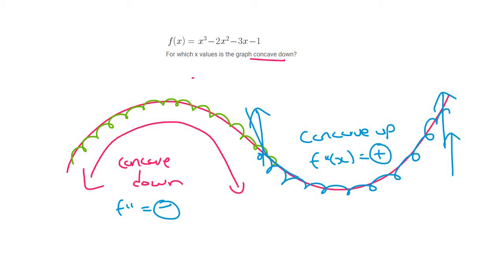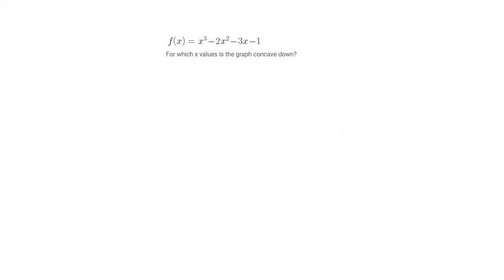I like to think of this as a smiley face, and so it's smiling, so it's positive, whereas this one is a sad face, and so that's negative. And so concave down is when the second derivative is negative.